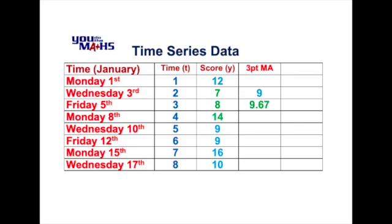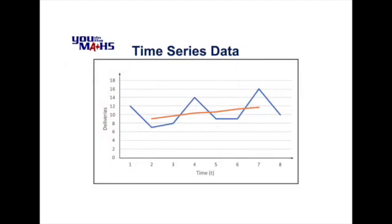We'll fill in the rest of the table — it's suggested that you pause the video and check the results for yourself. Now if we take those three-point moving averages and graph them on our original graph, we can see that we've smoothed out our original scores such that we get a line that allows us to see the overall trend — in other words, a gradual increase in the data.